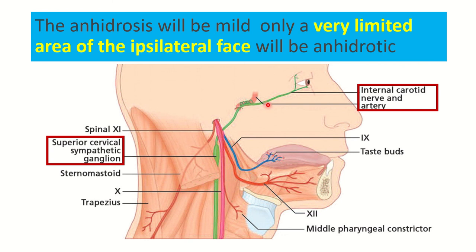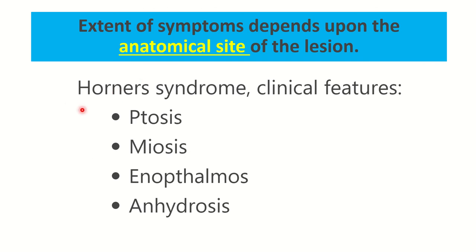After that it goes to the eye. So during repair of the internal carotid artery, this sympathetic plexus may be injured or damaged. We can see the anhydrosis will be mild — only a very limited area of the ipsilateral face will be anhidrotic. Anhydrosis is present only in a prior limited area.